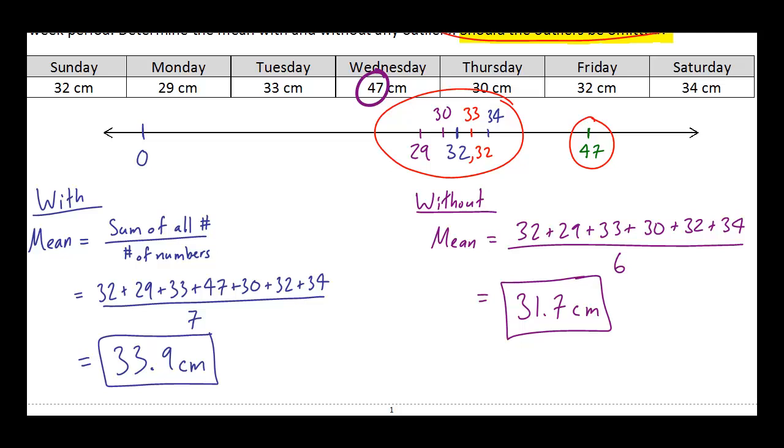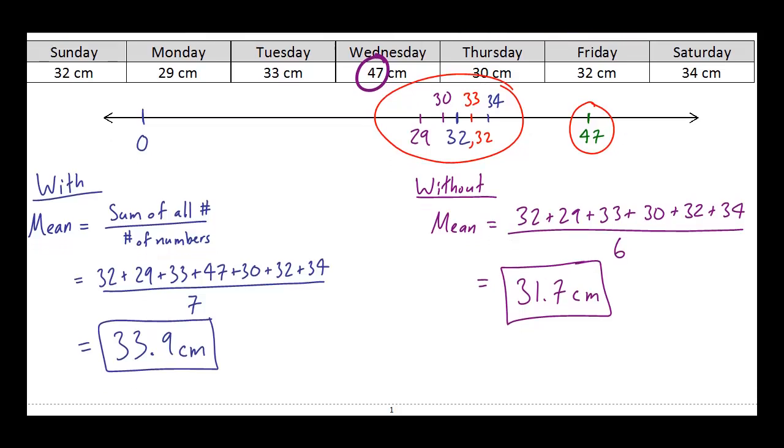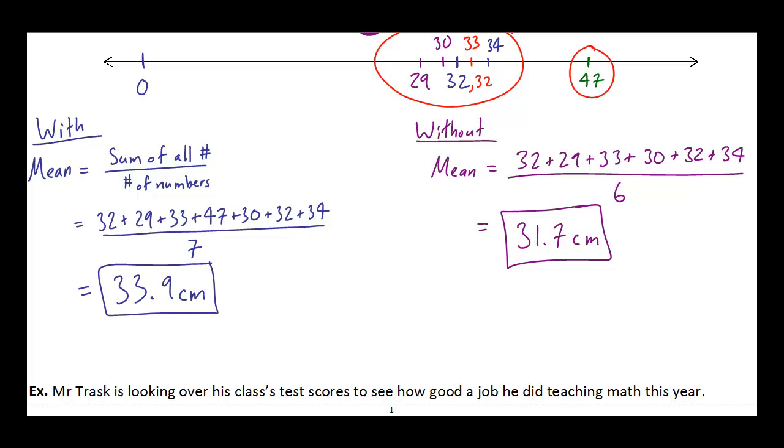Either I made a mistake measuring, or maybe I wrote down the wrong number, or who knows what. This number is just kind of so unlikely compared to the other ones. So what we would actually do is we would actually omit that 47, and so we would use this number right here. We will omit 47 centimeters because it is probably an error.